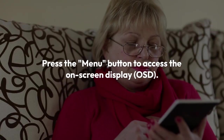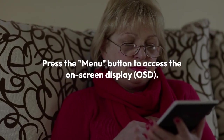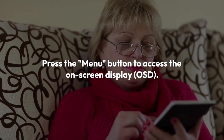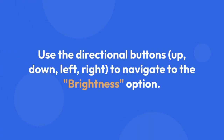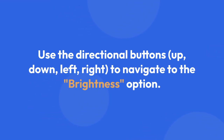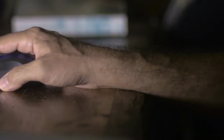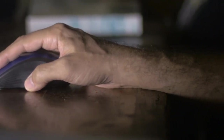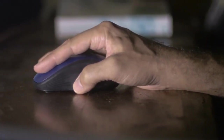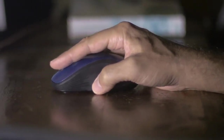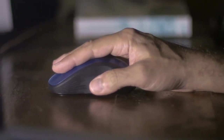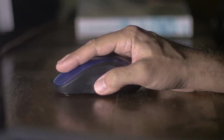Press the Menu button to access the on-screen display (OSD). Use the directional buttons — Up, Down, Left, Right — to navigate to the Brightness or a similarly named option. Then use the Plus and Minus buttons or the directional buttons to adjust the brightness level to your liking.